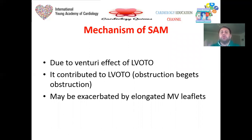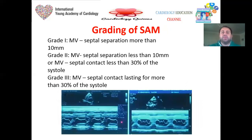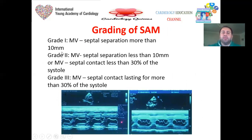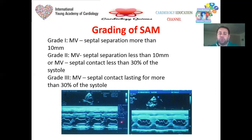Assessment of the mitral valve apparatus should not only concentrate on SAM — we must also assess mitral regurgitation. Grading of SAM: grade 1 is mitral valve-septal separation more than 10 mm (mildest form); grade 2 is separation less than 10 mm or contact for less than 30 percent of systole; grade 3 is mitral valve-septal contact for more than 30 percent of systole, the most severe form. Remember SAM is not part of the definition of HCM and may occur in other conditions.